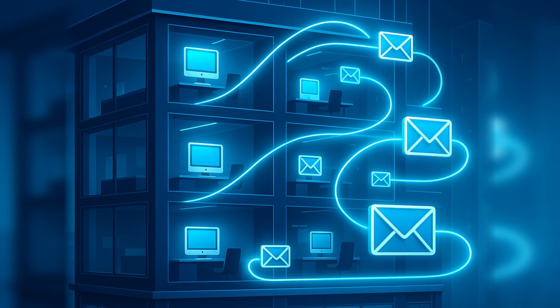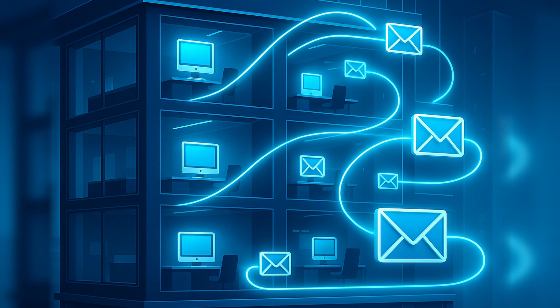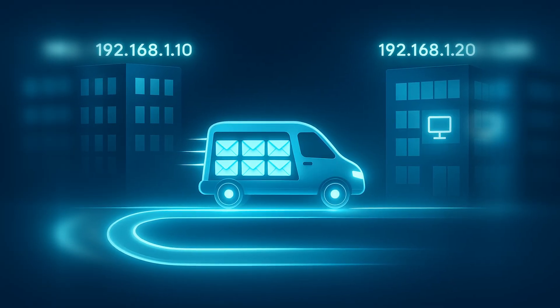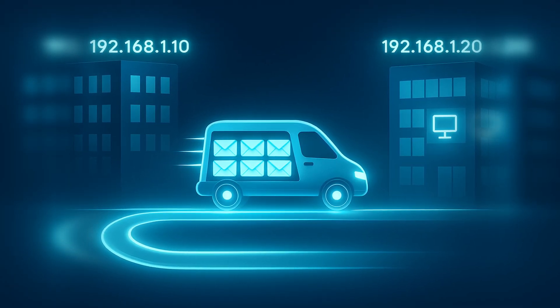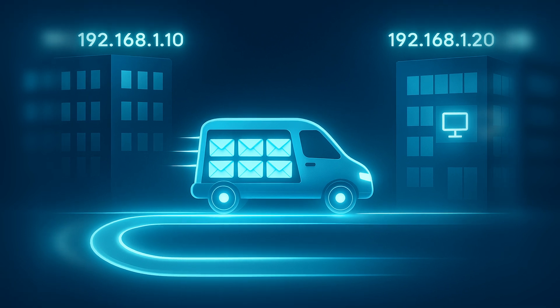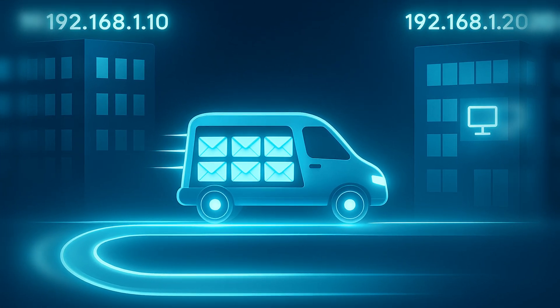Imagine a network is like a huge office building and devices need to send messages. IP, or Internet Protocol, is like the main delivery service that gets mail from one building or device to another using an IP address — the unique address of each building. How that mail is packaged inside the IP envelope is where TCP and UDP come in. This layering of protocols is called encapsulation.